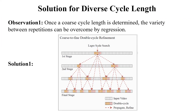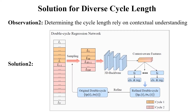For this challenge, we propose a counting framework based on two observations. Based on observation one, we develop a coarse-to-fine cycle refinement pipeline. Based on observation two, that determining the cycle length relies on contextual understanding, we design a double cycle regression network.